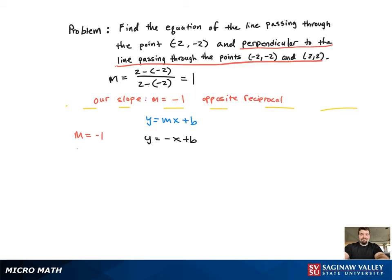Now we need to find b. So we're going to plug in the point that our line goes through, (-2, -2), into the equation and solve for b.